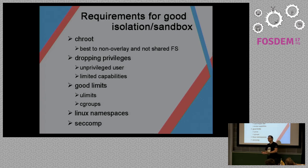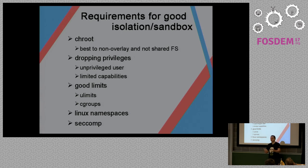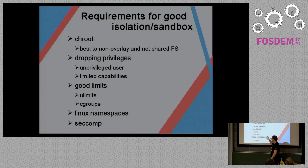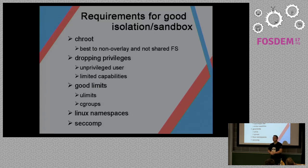Dropping privileges is not actually trivial in Perl. You can shoot yourself in the leg at least five times before you do it properly. Most developers simply don't remember that Linux has capabilities and don't use that feature. You also need to set limits. Most of you understand ulimits well, but I don't think any of you is using cgroups for your applications. This is why I started writing the cgroups module — cgroups are a very good set of limits that you can apply to multiple processes, not just a single process.